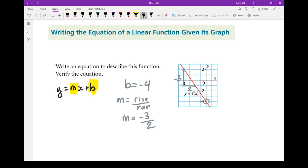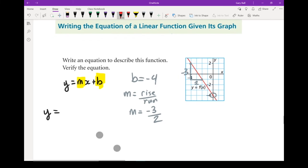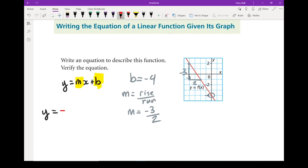I've now got enough information to put it into our equation. y equals, and instead of that m, I'm going to put in negative 3 over 2. x has to be in our equation. Instead of that b, I'm going to put in that minus 4. There's my equation drawn from the graph.